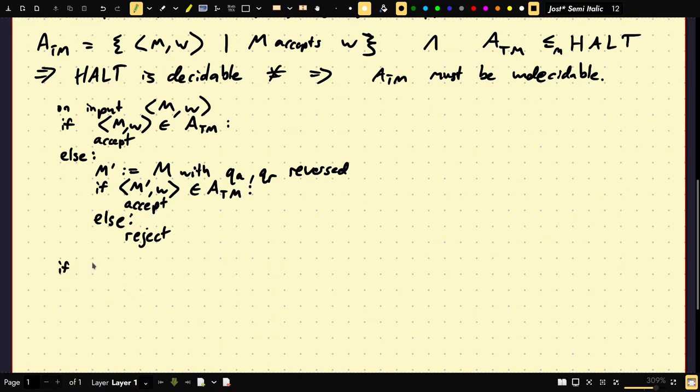Right? So, let's argue correctness. If M comma W is in ATM, that implies that F of M comma W, which is going to be what? It's going to just say accept or reject if it halts or not. But, it's going to be correct here. Right? So, and an element of this is going to map into HALT only if we could decide ATM. Right? Only if it was in ATM correctly. Right? If it's in ATM, accept if it's in ATM, accept. So, together, this whole thing implies that HALT is decidable.